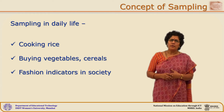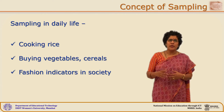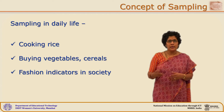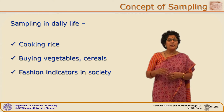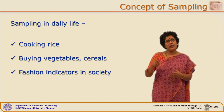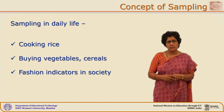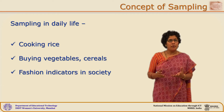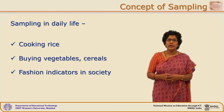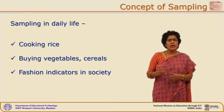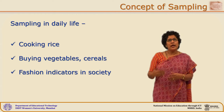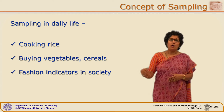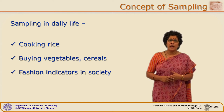Similarly, you might have gone to a market for buying vegetables or grains. Do we really check — is it even possible to check each and every grain that we purchase? It is not possible, and perhaps not needed as well. One checks only a few of them and is then able to take a judgment whether one wants to buy this vegetable or buy some from somewhere else.